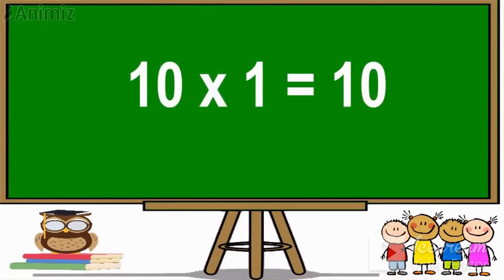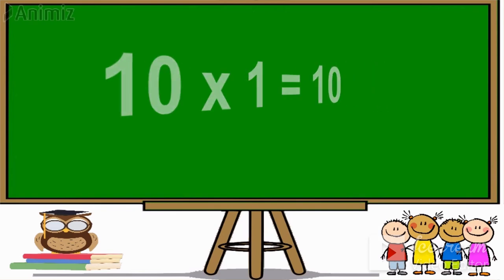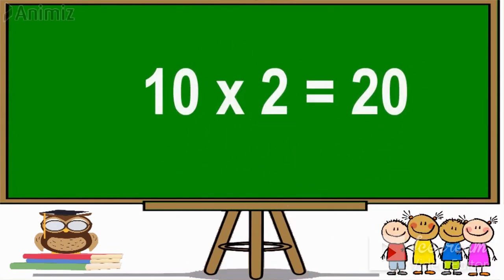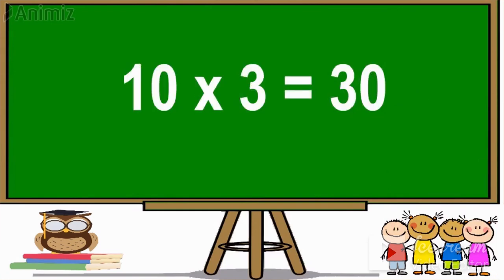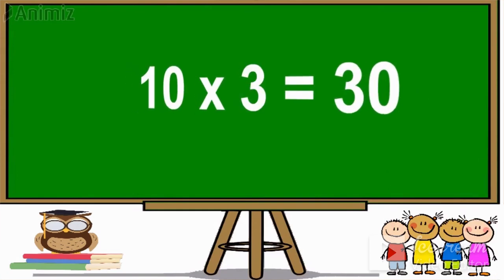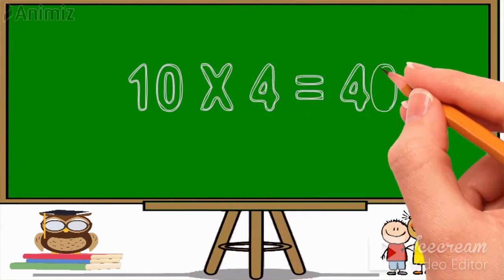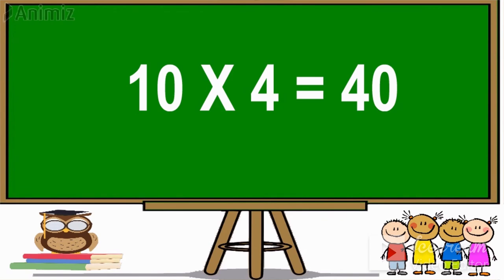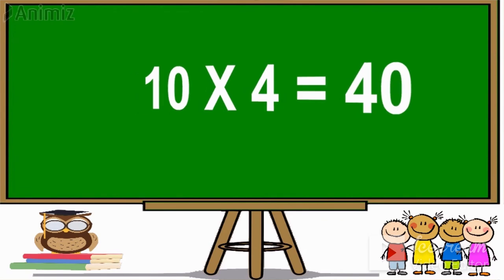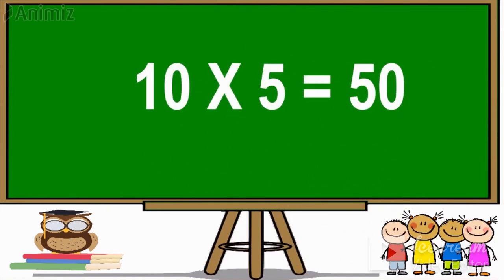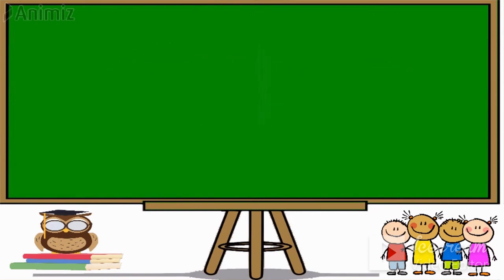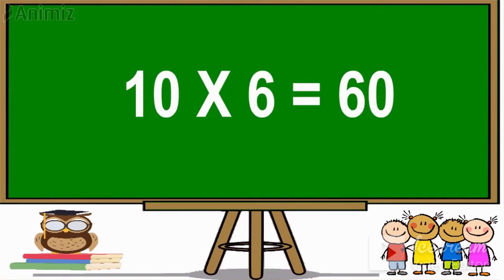Table of 10. 10 ones are 10. 10 twos are 20. 10 threes are 30. 10 fours are 40. 10 fives are 50. 10 sixes are 60.